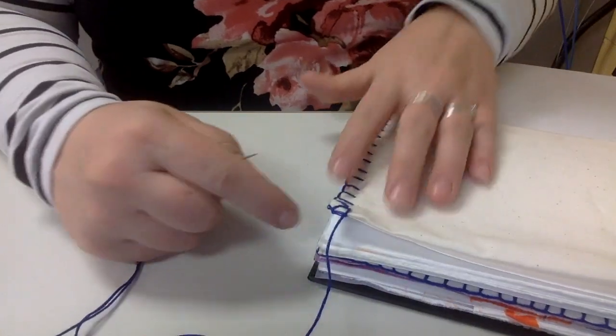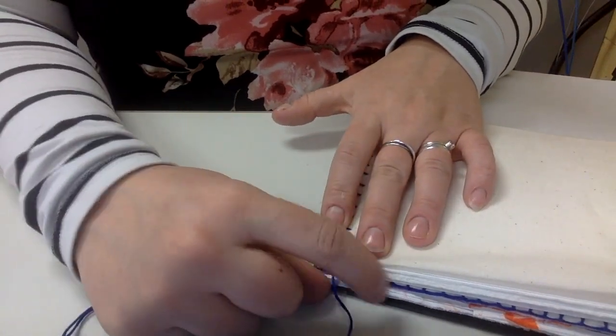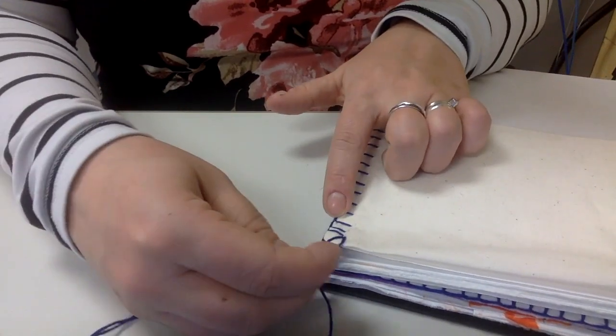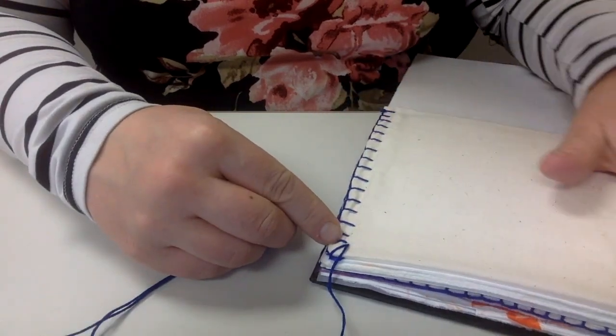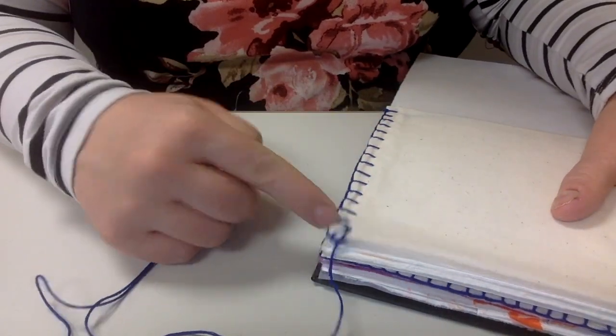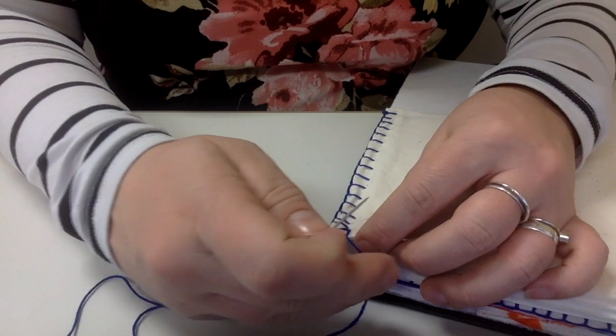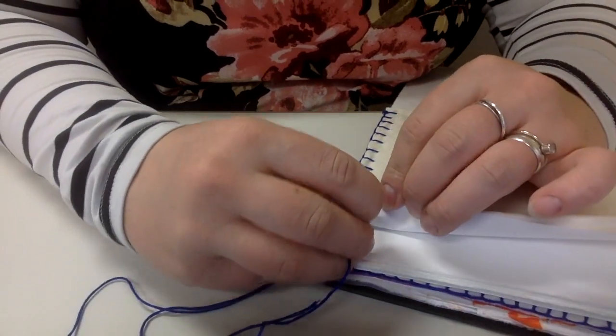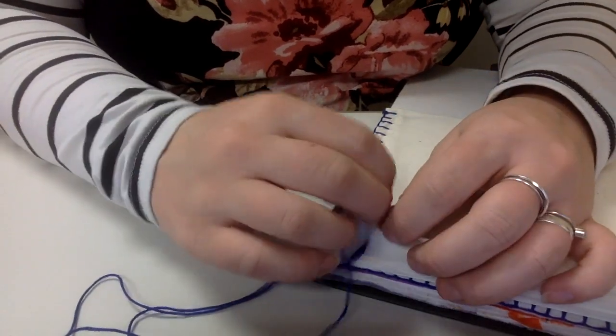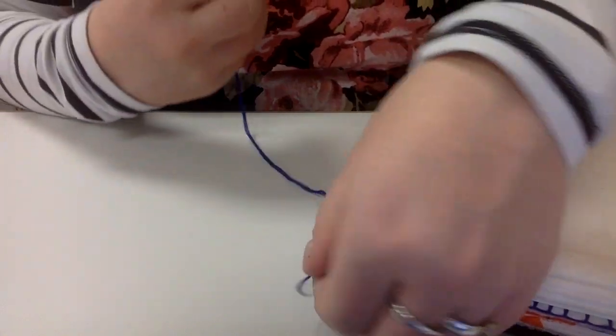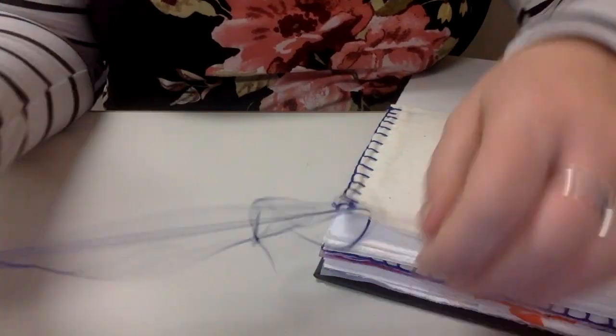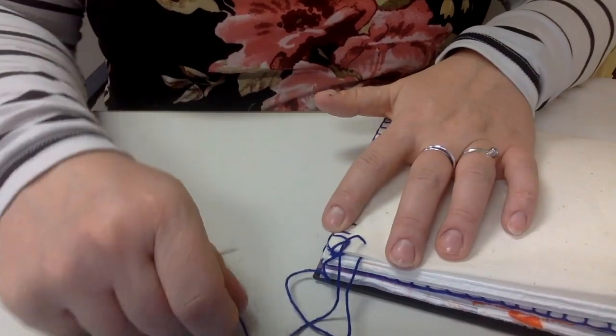When you're done, you should have a nice corner that has three stitches kind of all going through that same spot, and then you should be ready to start on your side edge. Now I can do blanket stitches starting along the edge of the book, and there you go.